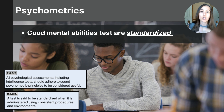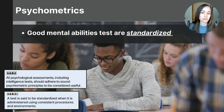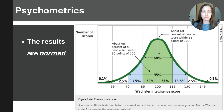Since the conditions are kept the same, it's easier to compare scores between test takers even if they took the test in different schools or different locations. Standardization helps ensure that comparisons between scores are fair and meaningful. So this first guideline for good psychological tests is that it should be standardized.